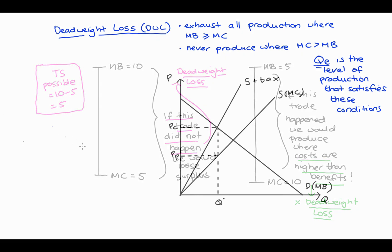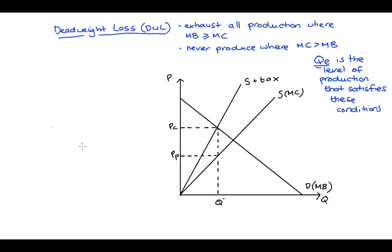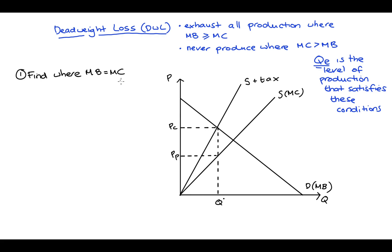From this understanding of deadweight loss, it's quite easy to isolate it in circumstances that can seem tricky to students. Let's consider a diagram showing a tax on producers. The tax artificially increases the marginal cost of production, so we use supply-plus-tax when looking at the market outcome. The price that consumers pay is PC, the price that producers get is PP, and the quantity traded is Q*. To find deadweight loss, I need to find where marginal benefit equals marginal cost — that's QE, where the demand and supply curves meet.